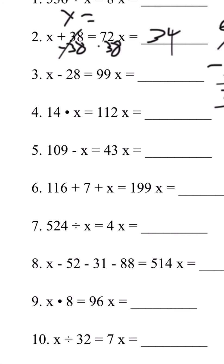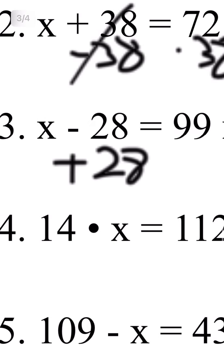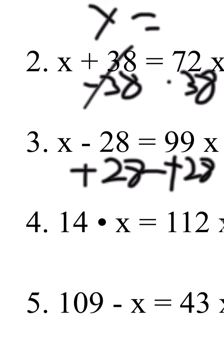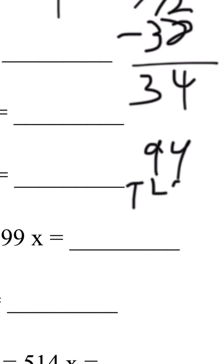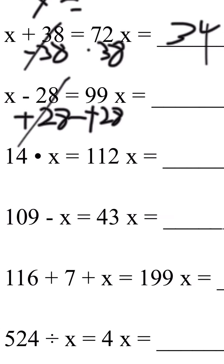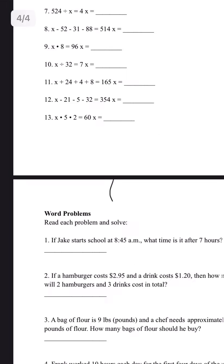Let's do number 3. You need to add 28 to both sides. Cross out this number. 99 plus 28: 9 plus 8 is 17. 1 plus 9 plus 2 is 12. So number 3 answer is 127. Next page.